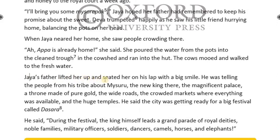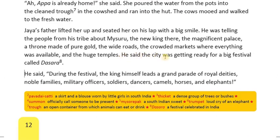Jaya's father lifted her up and seated her on his lap with a big smile. He was telling the people from his tribe about Mysuru — the new king there, the magnificent palace ('magnificent' means splendid), a throne made of gold, the wide roads, the crowded markets where everything was available, and the huge temples. He said the city was getting ready for a big festival called the Dasara. During the festival, the king himself leads a grand parade of royal deities, noble families, military officers, soldiers, dancers, camels, horses and elephants.